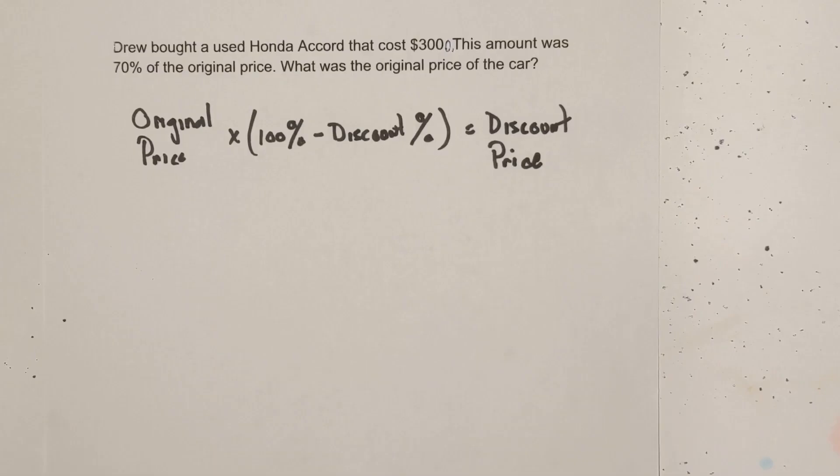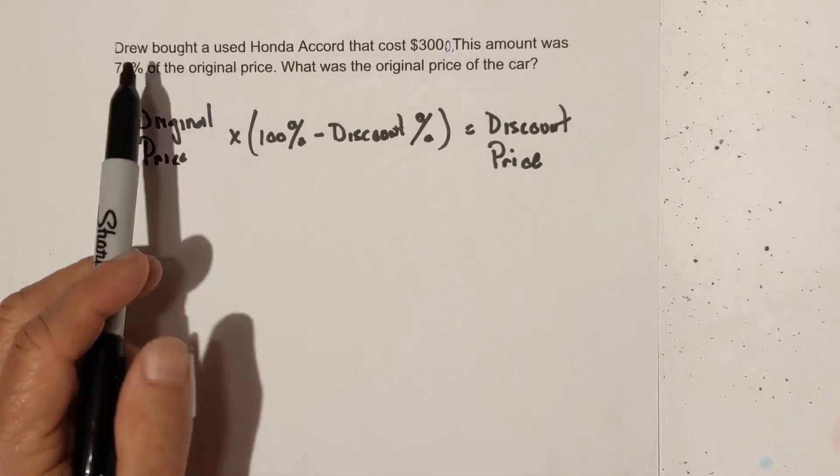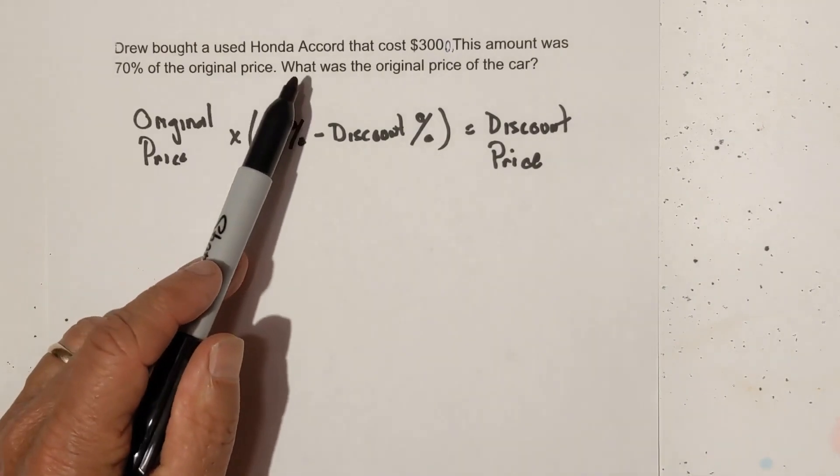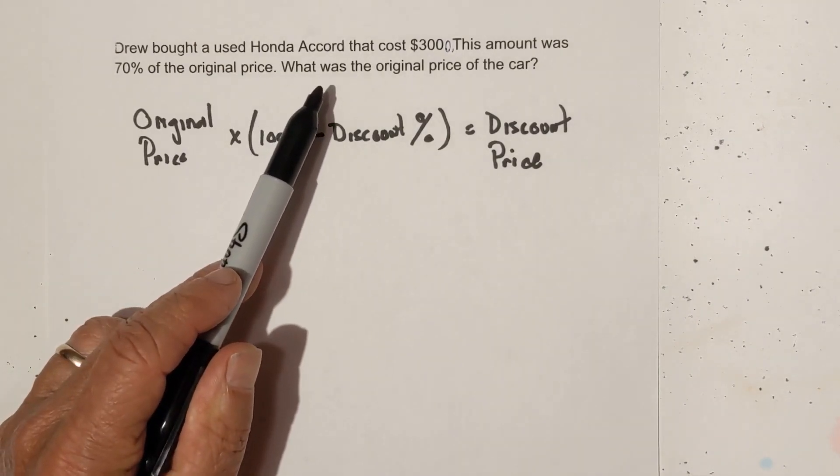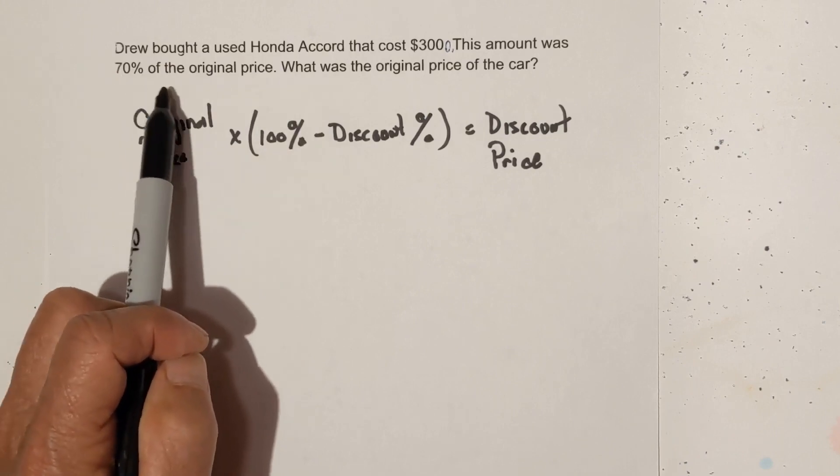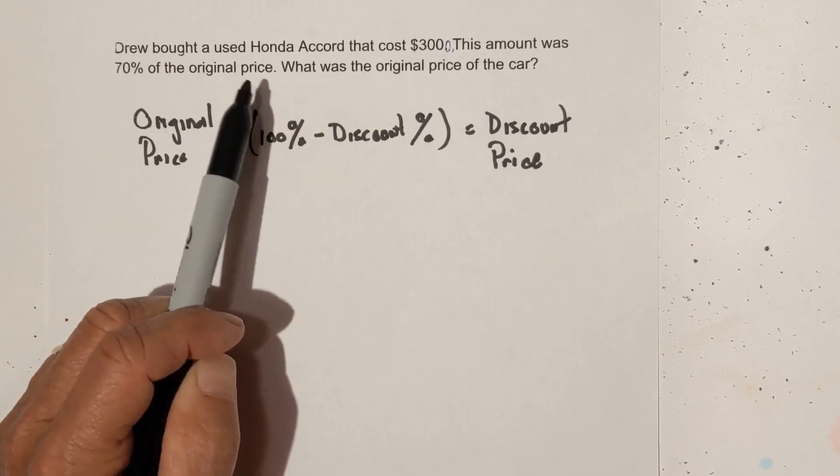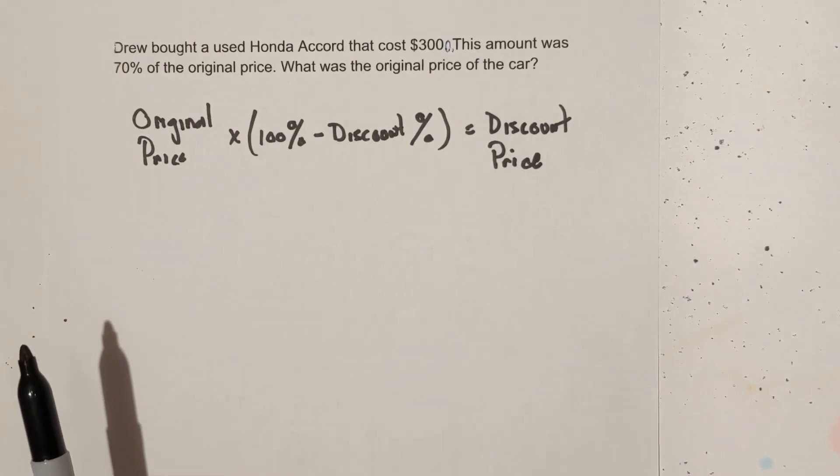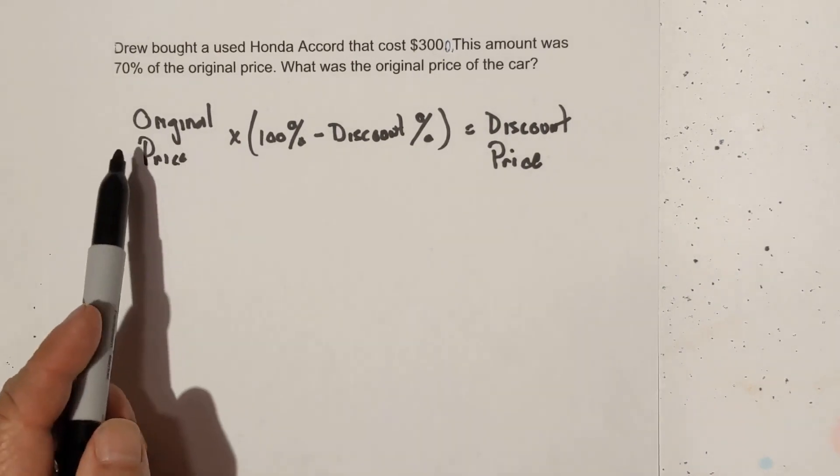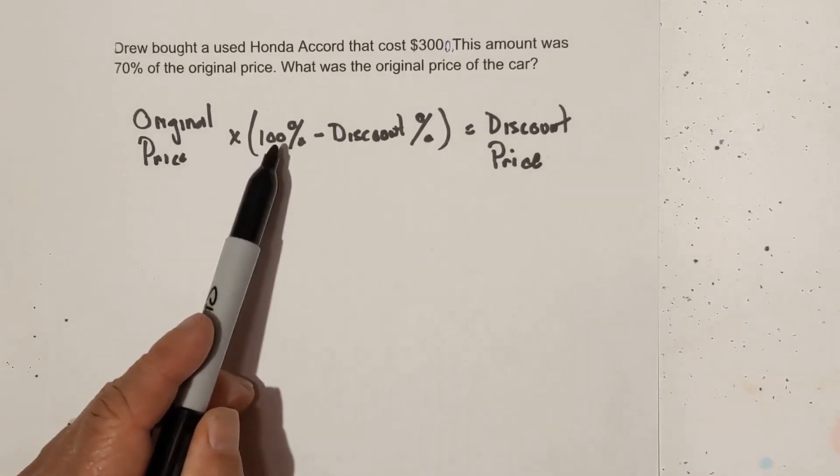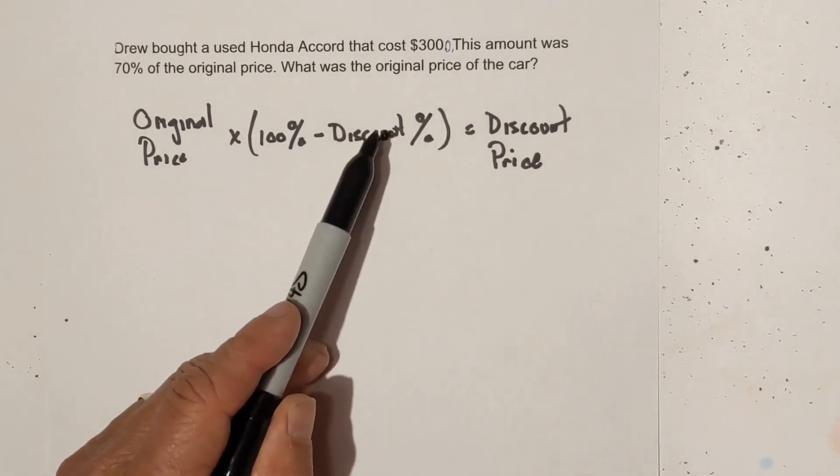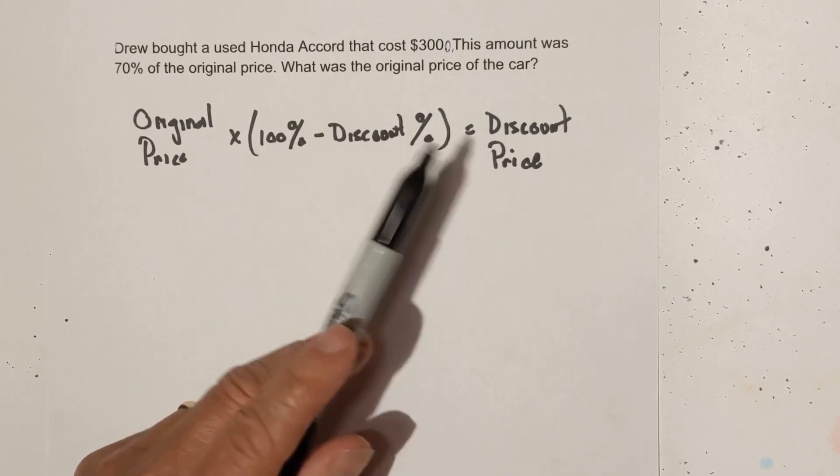Let's take a look at this next example. Drew bought a used Honda Accord that cost $3,000. The amount was 70% of the original price. What was the original price of the car? Drew wants to know, a while back, how much was this car new? So we're going to use this same formula. Original price times 100% minus the discount percent equals the discount price.